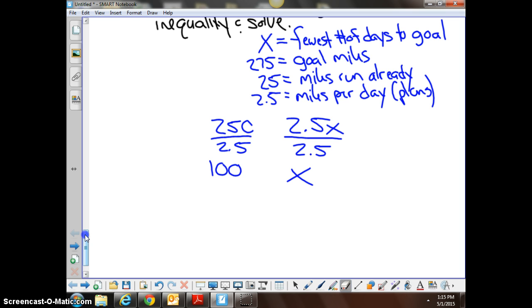So let's flip it and talk through it one more time. 250 is less than or equal to 2.5x. So x is the fewest number of days to reach the goal. X could equal 100 or x could be more than 100. If he's only running 2.5 miles a day, it can't be any less than 100. It's got to be at least 100 or more. Does that make sense?